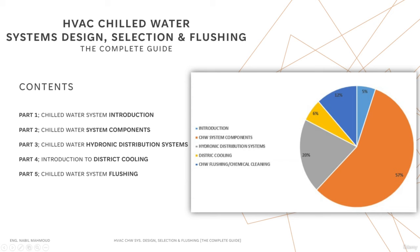This course starts from a basic level, reaching up to advanced and expert levels in a simple yet detail-oriented way. The course consists of five parts, starting with Part 1, which is a general yet detailed introduction to chilled water systems and why using chilled water in the first place, along with a comparison between DX systems versus chilled water systems, followed by the basic governing equations related to chilled water systems.